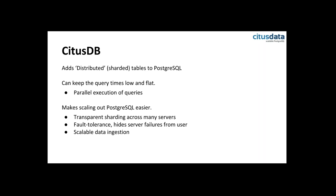CitusDB is a way of doing that for PostgreSQL. It adds the notion of a distributed table to PostgreSQL, sharded across a cluster of worker nodes which are also PostgreSQL servers. This helps keep query times low and flat even if your data size is growing, because you can keep adding more servers. CitusDB makes sharding and scaling out easier. You could do sharding manually, but then making your applications aware of those machines, handling fault tolerance, and doing the querying becomes a lot of work.